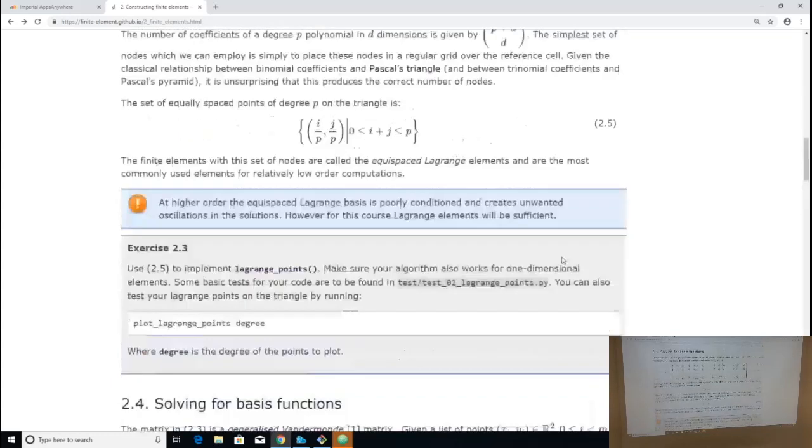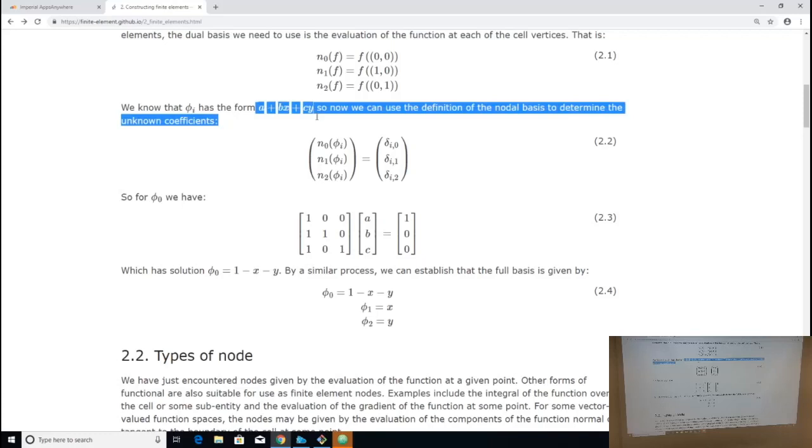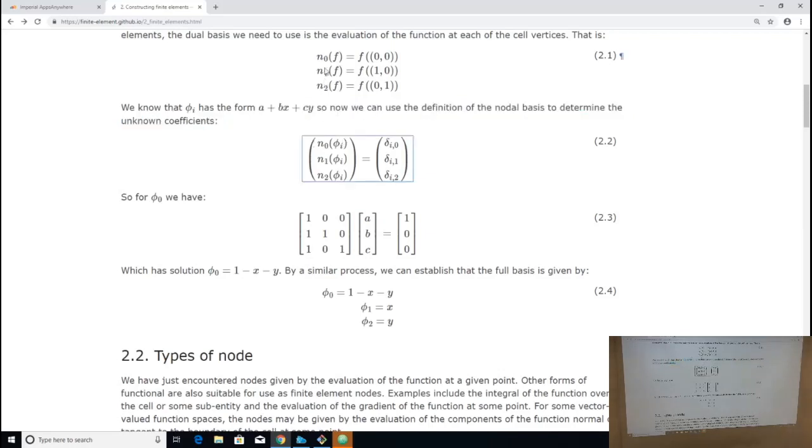If you remember, we constructed in our tweet example this matrix here. And this matrix here is the basis for our polynomial space, the generic basis, not the finite element basis we're building, evaluated at the set of points that define my node. So the first row is the result of evaluating this guy at the point 0,0. The next row is the result of evaluating this guy at 1,0. And the final row is what you get if you evaluate this guy at 0,1.